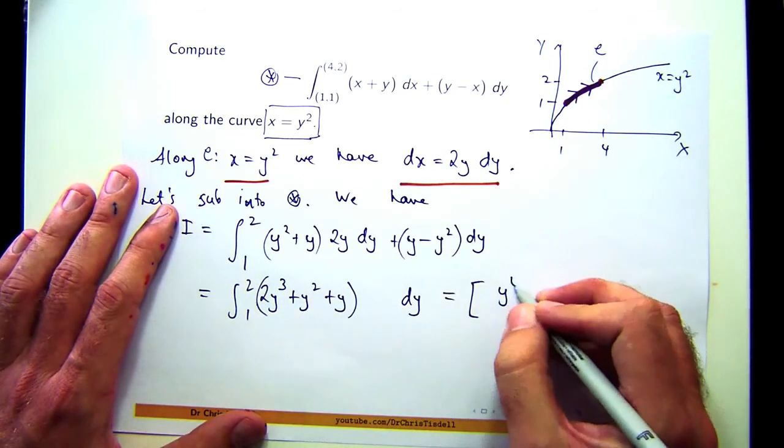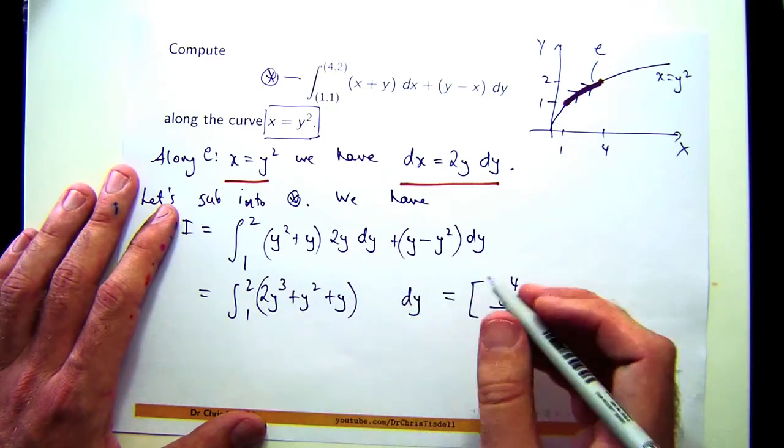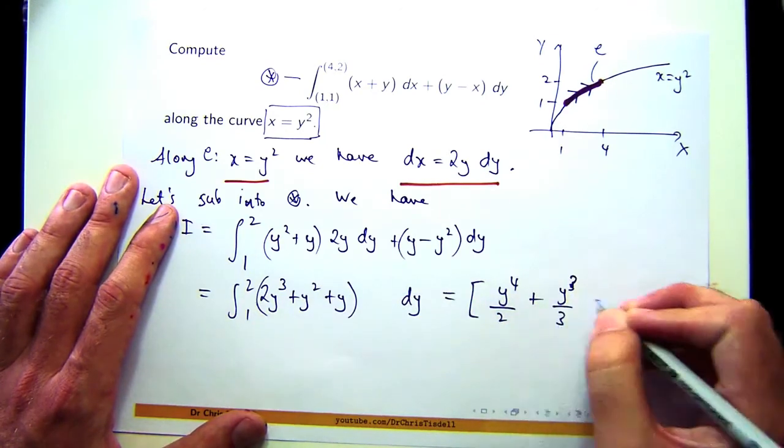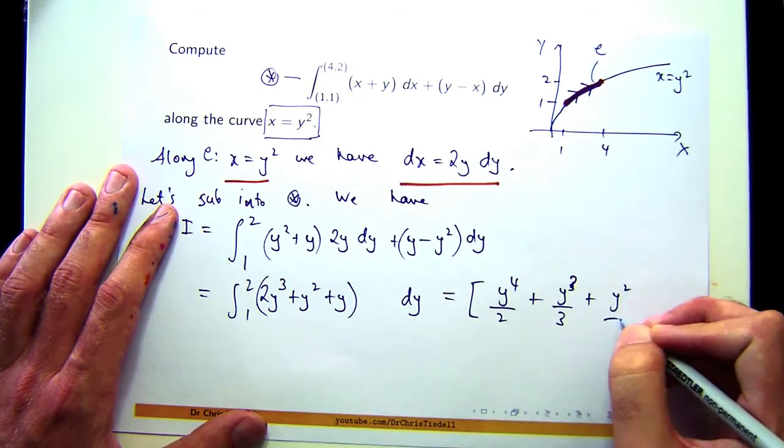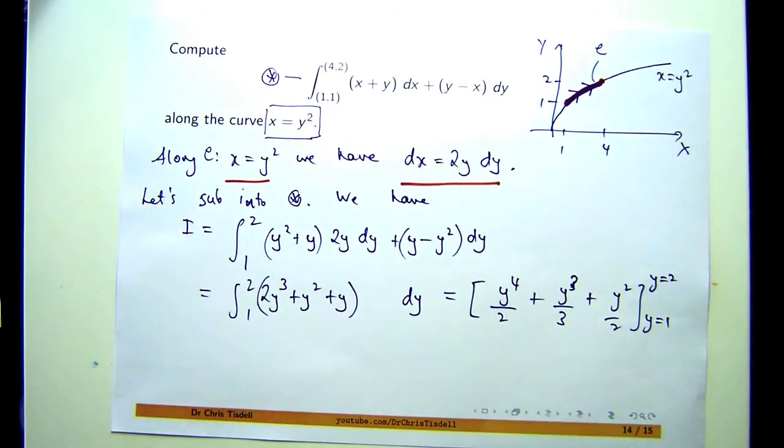So you're going to get y to the power 4 over 2 for that first term. So integrate with respect to y. Plus y to the power 3 over 3 plus y squared over 2. The value added at y equals 2 and y equals 1.